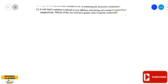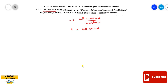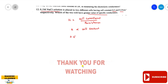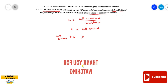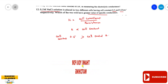Question 12: A 0.1 M KNO₃ solution is placed in two different cells having cell constants 0.5 cm⁻¹ and 0.25 cm⁻¹ respectively. Which will have greater specific conductance? The basic formula is: κ = cell constant / resistance. So κ is directly proportional to cell constant. Therefore, the cell with cell constant 0.5 cm⁻¹ has greater specific conductance than the cell with cell constant 0.25 cm⁻¹.